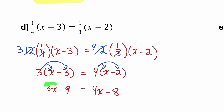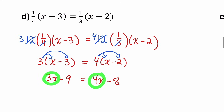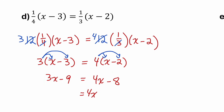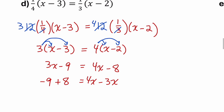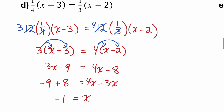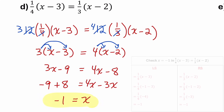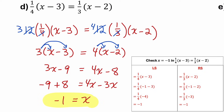Now I'll get the variable terms on the same side — I'll move them to the right. The 4x stays on the right, and this 3x can move to the other side as negative 3x. The constant terms move to the left: the negative 9 stays, and the negative 8 moves to the left by adding 8. So negative 9 plus 8 is negative 1, and 4x minus 3x is x. So we have a final answer of x equals negative 1, which can be verified in the original equation.